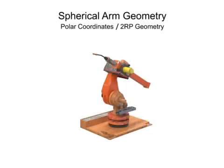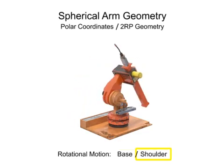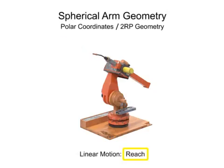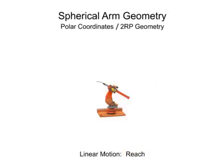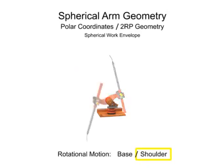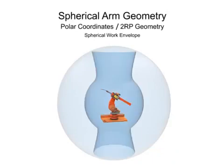Robotic arms with spherical geometry have rotational movement in two directions: rotational movement at the base and rotational movement at the shoulder. They also have linear motion in one direction, typically the reach of the arm. Spherical arm geometry robots have a mostly spherical work envelope at their outer reach, but are limited by the linear reach of the arm and the rotation of the shoulder joint. The shape of the robot's inner work envelope is almost conical and does not become a sphere until the arm extends.